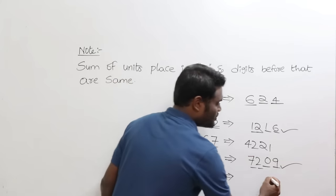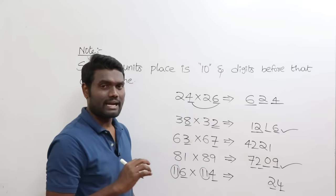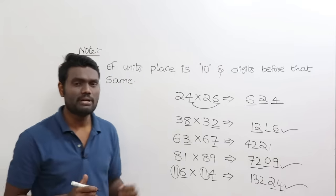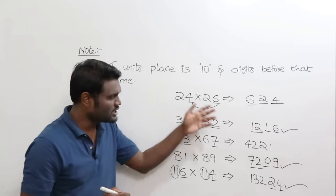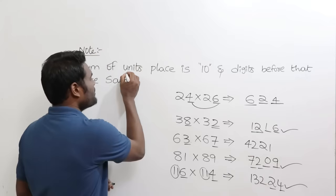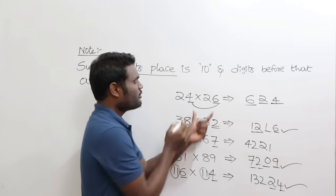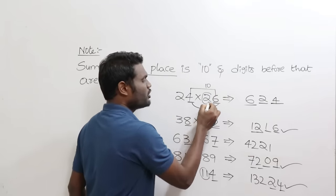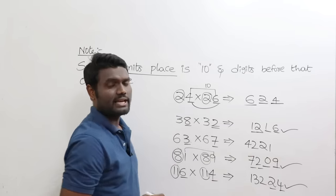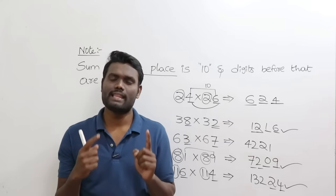Here the last 2 digits are 6 and 4: 6×4 = 24. Both leading digits are 11, so multiply 11 by its next number, which is 12: 11×12 = 132. So the answer is 13224. When to apply this rule: sum of the units place digits must equal 10 (e.g., 4+6=10, 1+9=10), and the digits before the units place must be the same. Then you can apply this technique and get the answer in just 2 seconds.